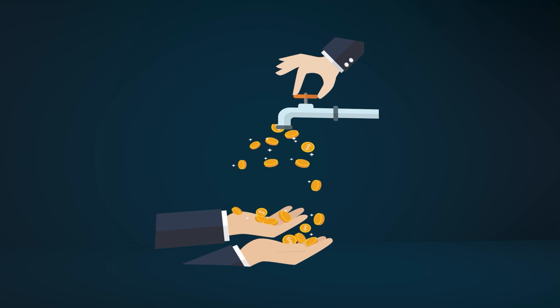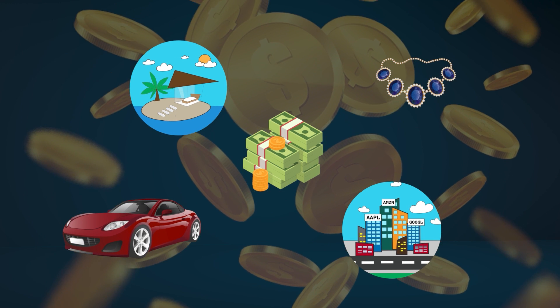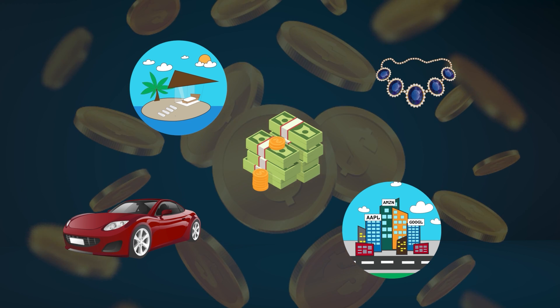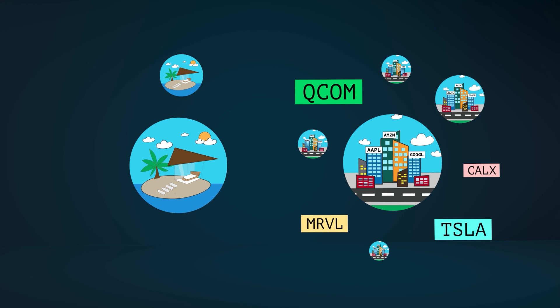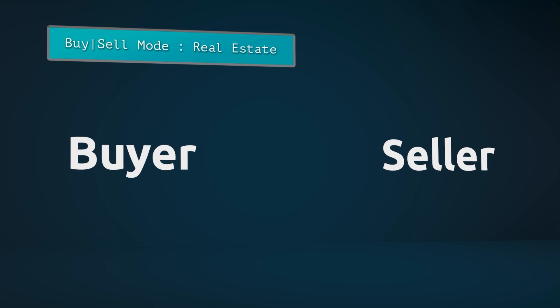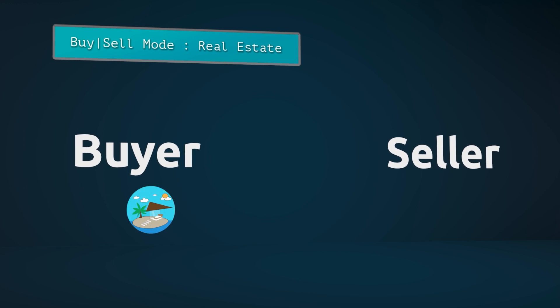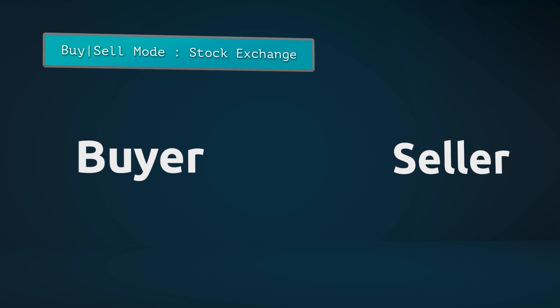Liquidity is a relative measure of how quick and easy it is to trade one asset for another. The most liquid asset you can find is cash, because you can exchange pretty much anything you want for cold hard cash. On the other hand, real estate is far less liquid — finding a house buyer takes way longer than finding someone who wants to buy a share of Apple or Google, and you might even have to lower the price over time. Real estate markets have less liquidity than big company stock markets, but assets of the same type aren't equal when it comes to liquidity.